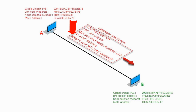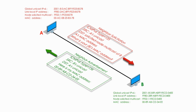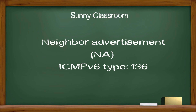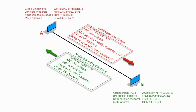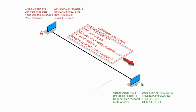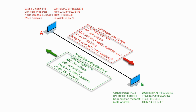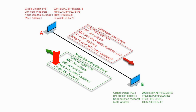When Computer B gets the Neighbor Solicitation, it replies with a Neighbor Advertisement. The Neighbor Advertisement header includes ICMPv6 type 136, Computer B's unicast as source address, and destination address is Computer A's unicast. The packet includes Computer B's MAC address.